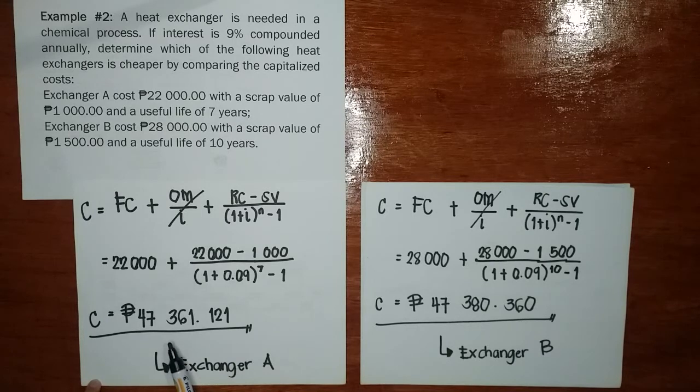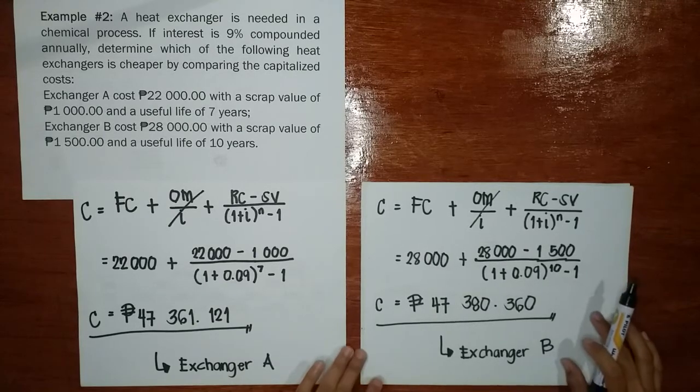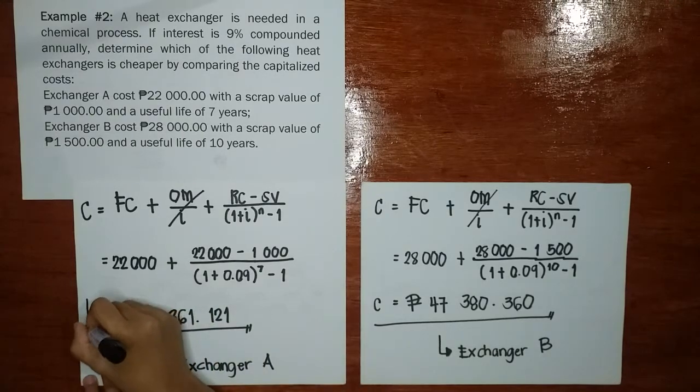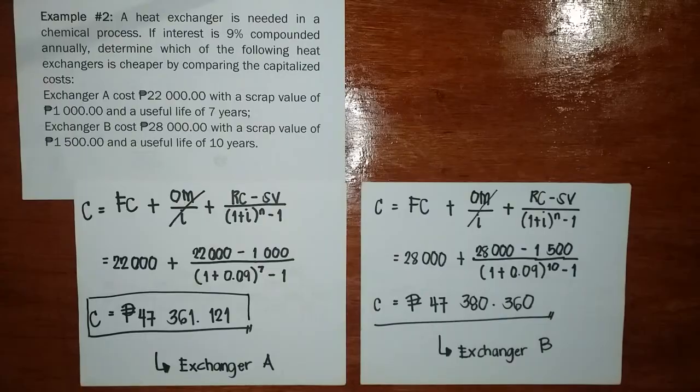Kasi mas ma-liit siya ng magkano. Pag minusin natin itong dalawa. So A is cheaper by 19 pesos 0.24 centavos. Pag ma-minusin nyo lang itong dalawa. Parang ganun siya ginagawa natin kay present economy. So ito ang ating final answer.